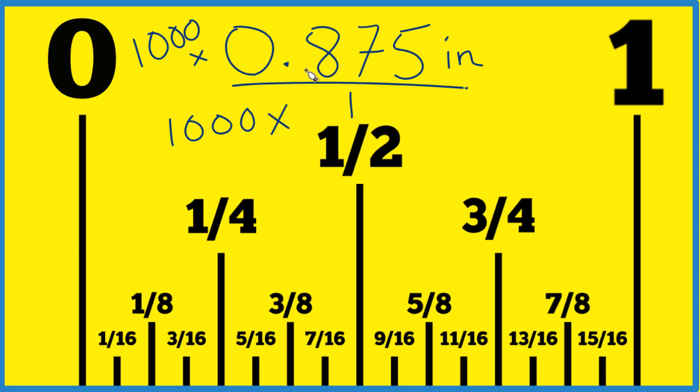Because what that'll do is get rid of this decimal point. So a thousand times 0.875 equals 875, thousand over 1 equals a thousand. So now we have a fraction with no decimal points, but we need to simplify this a little further.